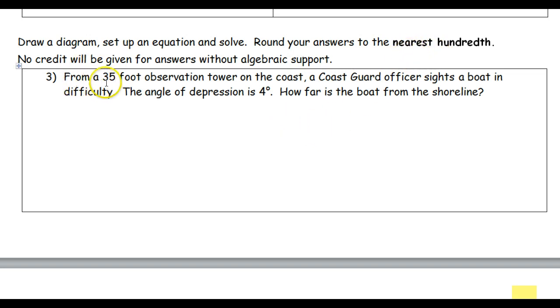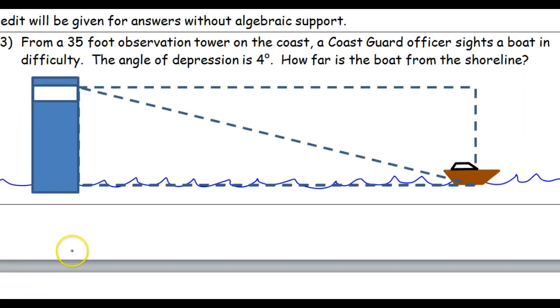First problem. From a 35-foot observation tower on the coast, a Coast Guard officer cites a boat in difficulty. The angle of depression is 4 degrees. How far is the boat from the shoreline? Here's a picture of the situation. It is a 35-foot observation tower, so that means this height over here is 35 feet.